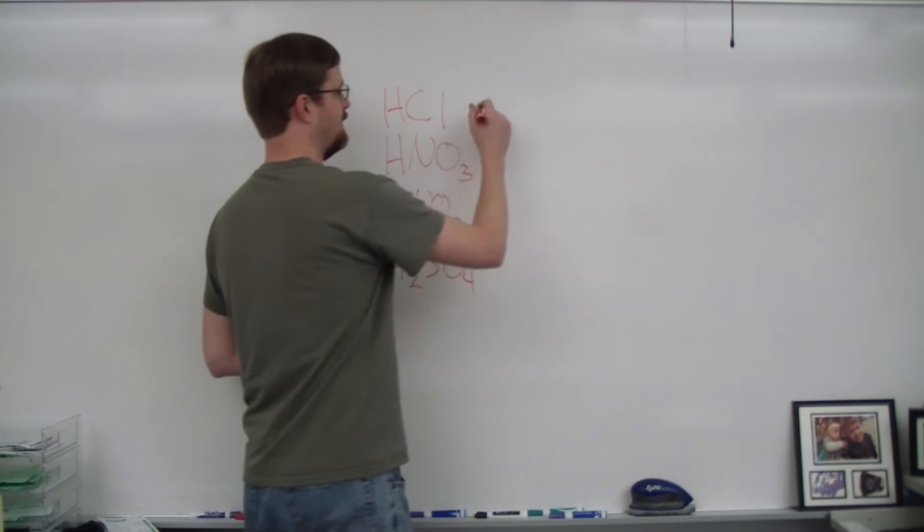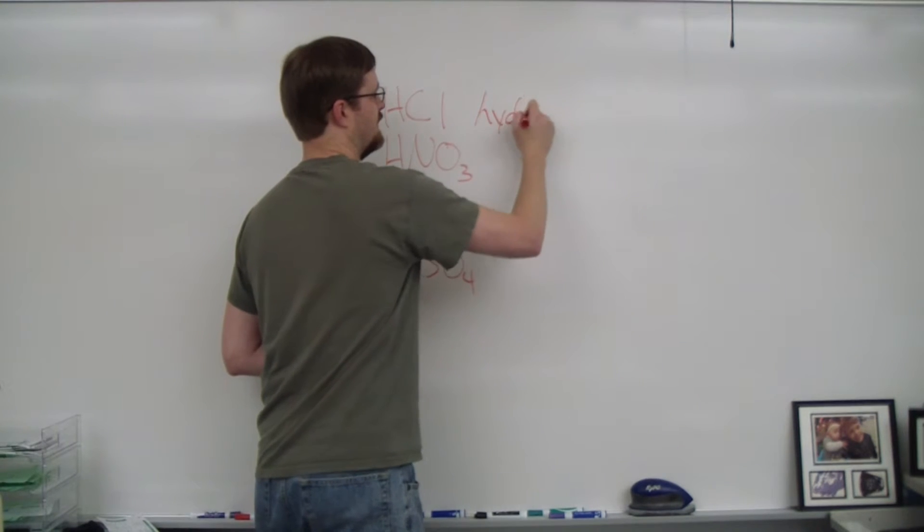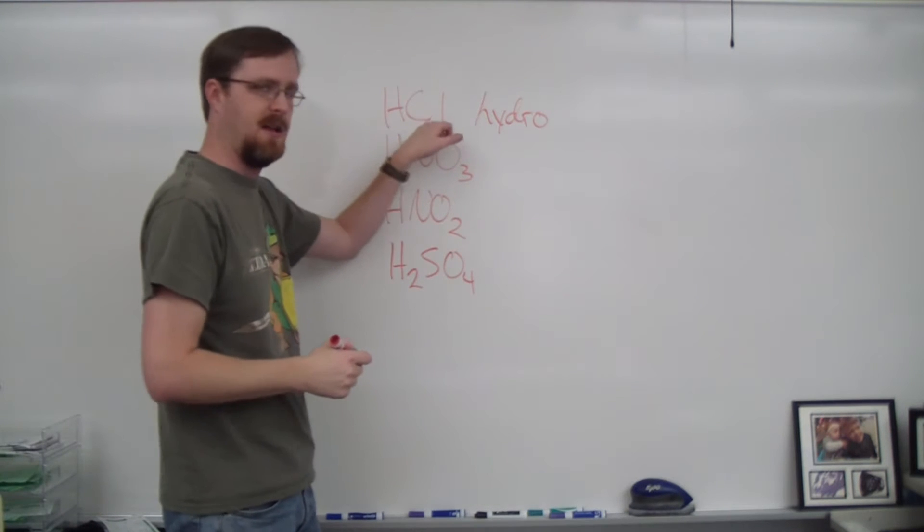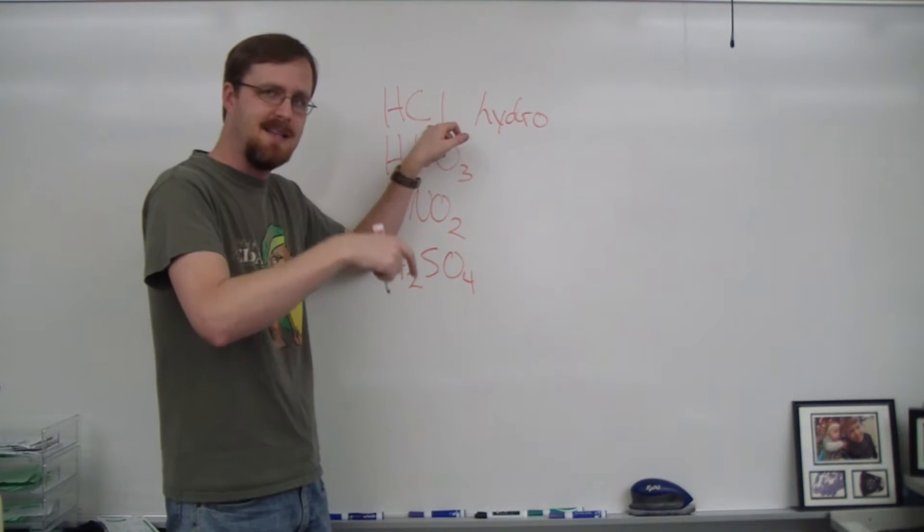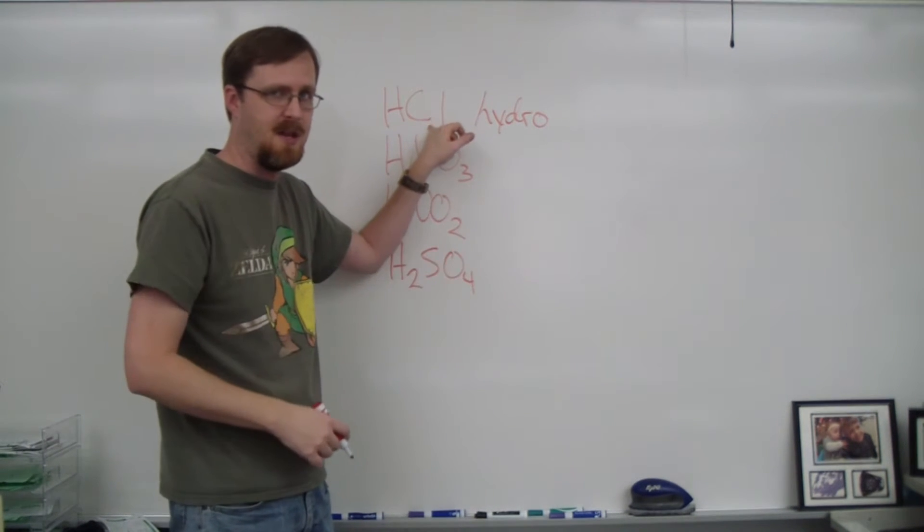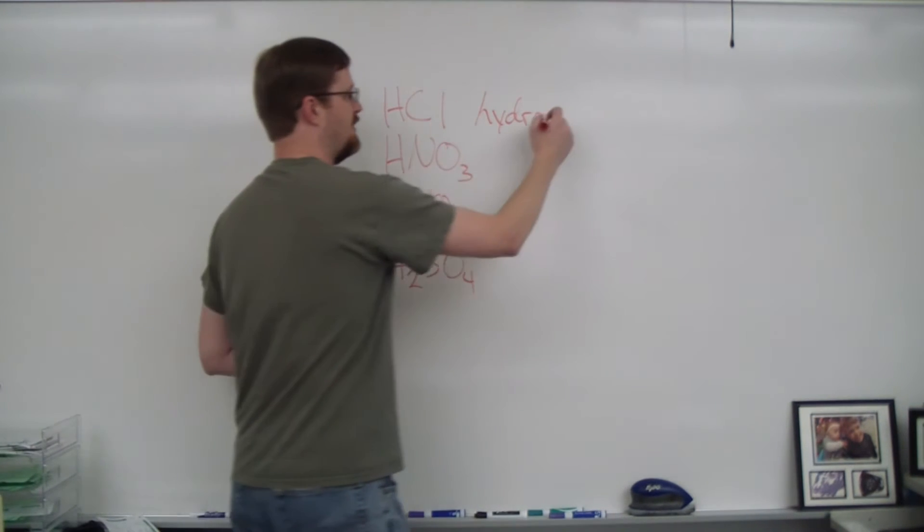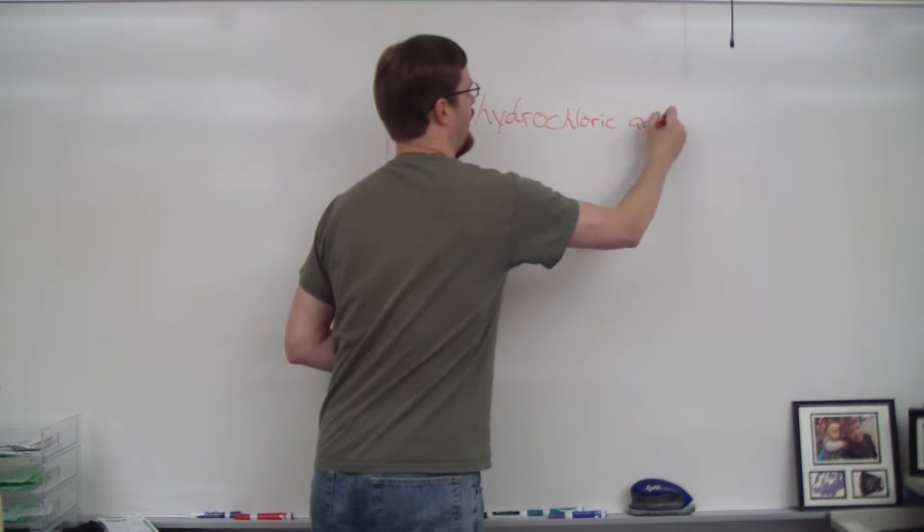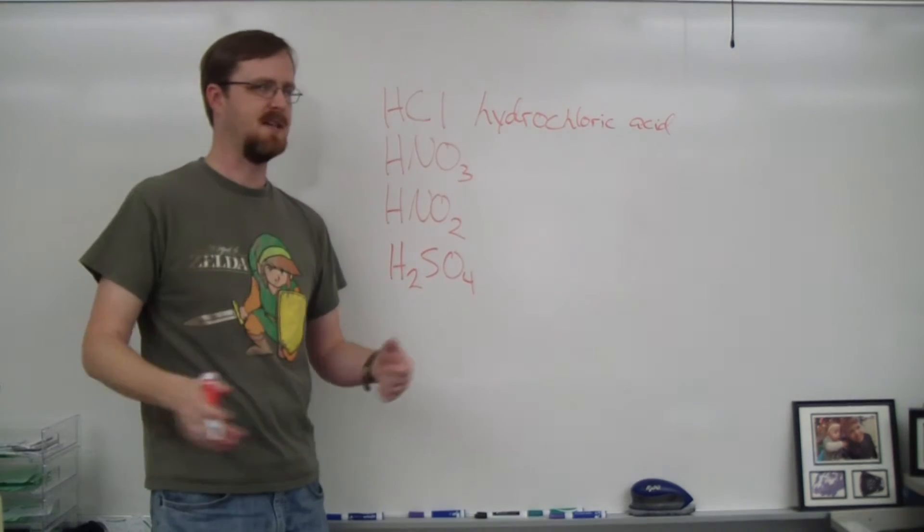All binary acid names start with the prefix hydro. And then you take the other element, you change the ending to IC, and then just stick the word acid on the end. So in this case, this is chlorine, which becomes chloric, and then acid. It's that simple.